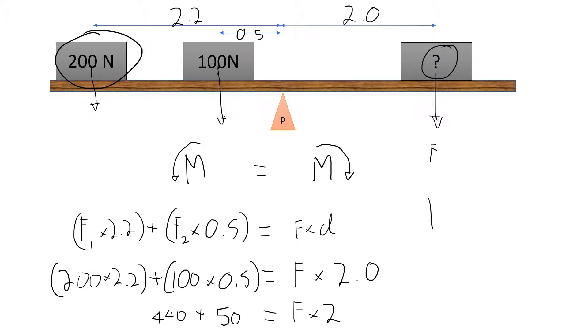So that basically means that F, and if we move, if we divide this side by 2, and this side by 2, we'll get 490 divided by 2, which is 245 newtons, will be the size of this force up here. Thanks, guys.